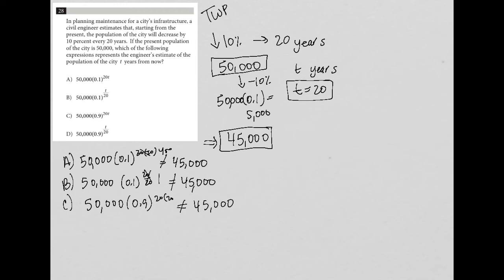And then lastly, choice D, 50,000 times 0.9 to the 20 over 20, actually does equal 45,000. 0.9 to the first power is 0.9.